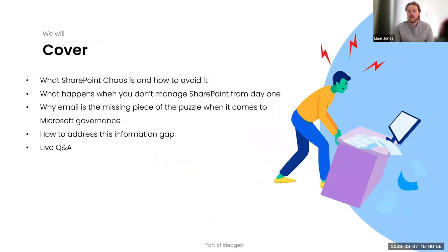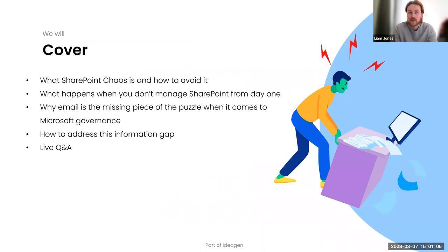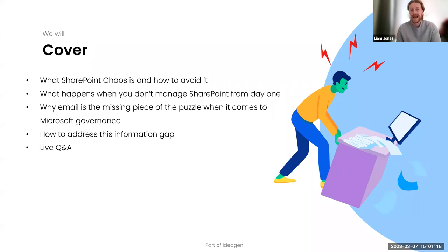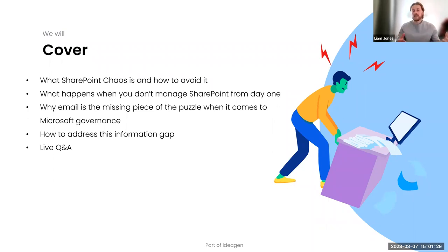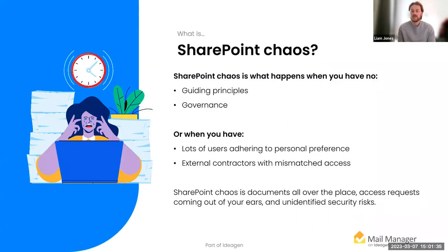Before we jump in, I'll just quickly run through the agenda for today's session. We're going to cover what SharePoint chaos is and how to avoid it, as well as what happens when you don't manage SharePoint from day one. Why email is the missing piece of the puzzle when it comes to Microsoft governance. How to address this information gap. And finally, we'll do a live Q&A. Throughout the webinar we do have a Q&A feature, so please pop your questions in there and Dominic and I will get to them at the end.